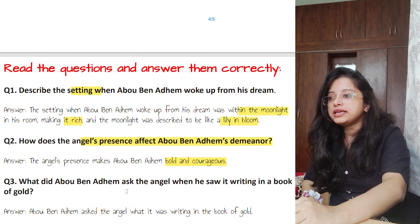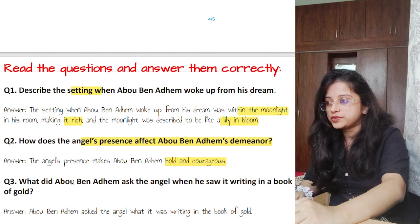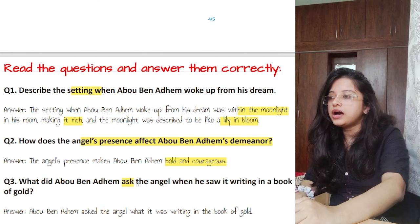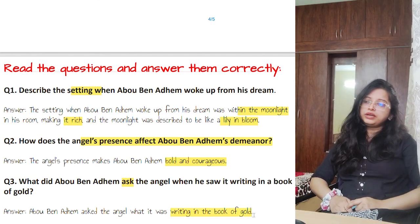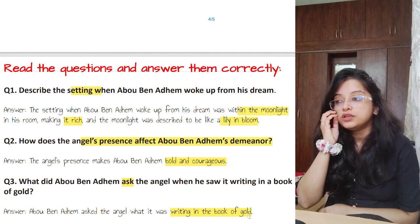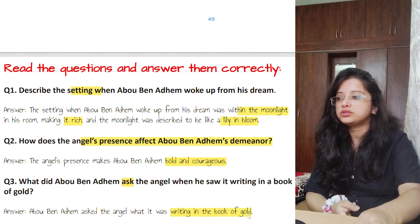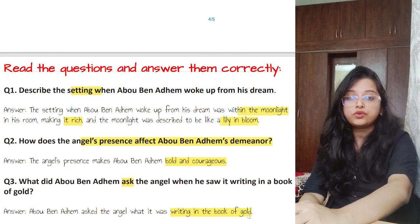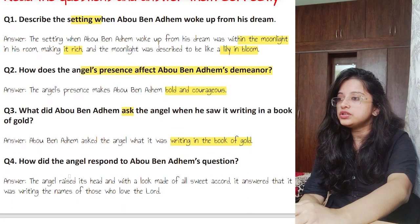Question three: what did Abu Ben Adham ask the angel when he saw it writing in the book of gold? The answer is: Abu Ben Adham asked the angel what it was writing in the book of gold. This is a very simple one-mark question likely to appear as part of a combined question. He asked the angel what it was doing — what it was writing in the book of gold.